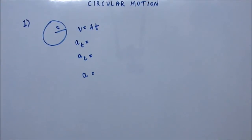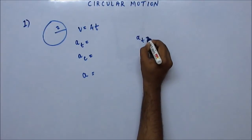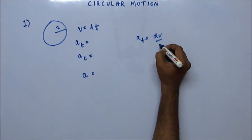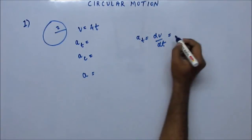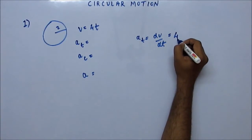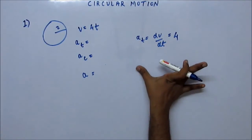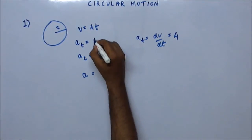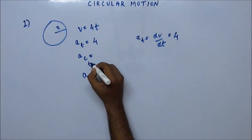Sit with a pen and paper and we'll be solving some problems — as I give you the question, you have to solve them. Tangential acceleration, as we know, is dv/dt — rate of change of velocity. If you do dv/dt here, it will come out as 4. So tangential acceleration comes out as constant 4 units.